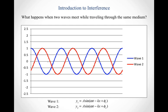The next question we want to consider is what happens when two waves meet while traveling through the same medium. We'll start by thinking about identical waves. Here is a graph showing two waves: wave 1 in blue and wave 2 in red. From their equations, they're identical except for one thing — they have the same amplitude, same angular frequency, same angular wave number, but different phases. We want to see what happens as we add these two waves together to create a resultant wave.